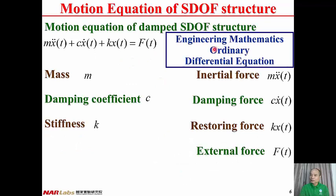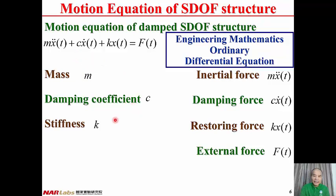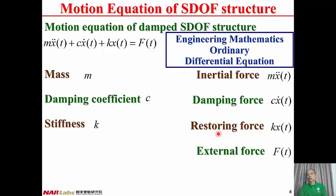From engineering mathematics, this ODE is second-order due to the second derivative, non-homogeneous due to the forcing function, and has constant coefficients because M, C, K are constant. M is the mass of the structure, C is the damping coefficient, and K is the stiffness. The inertial force Mx-double-dot is proportional to acceleration, the damping force Cx-dot is proportional to velocity, the restoring force Kx(t) is proportional to displacement, and F(t) is the external force applied to the structure.